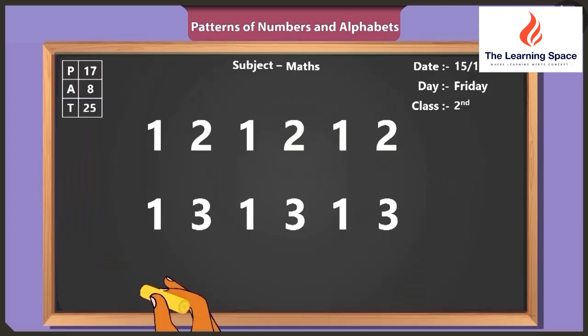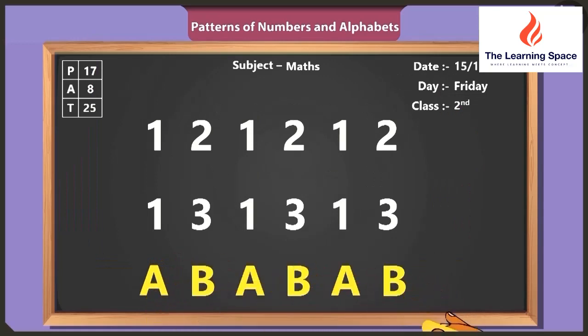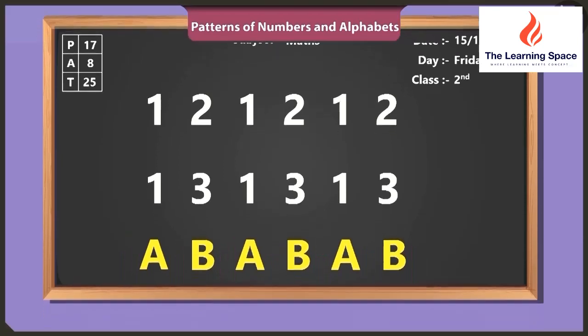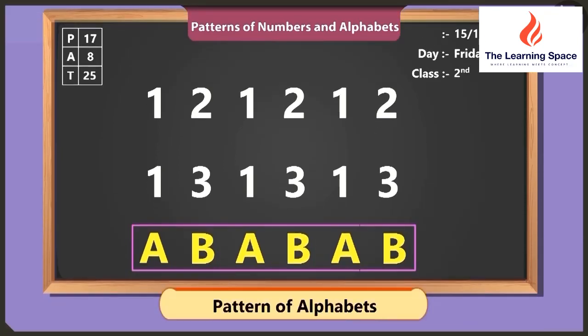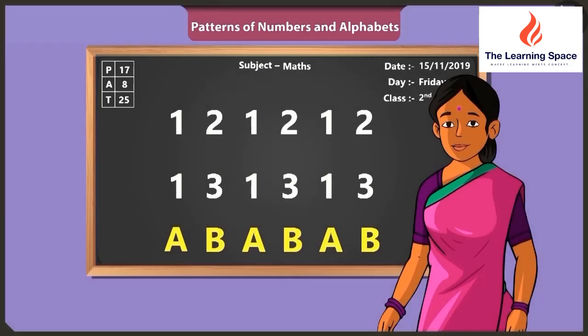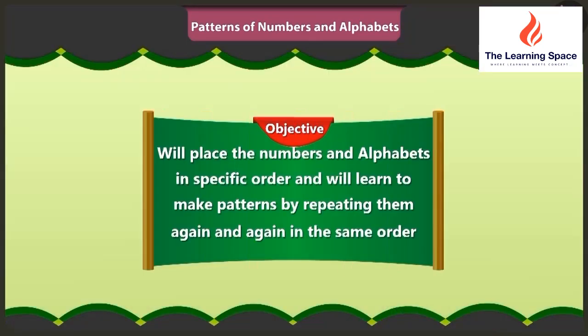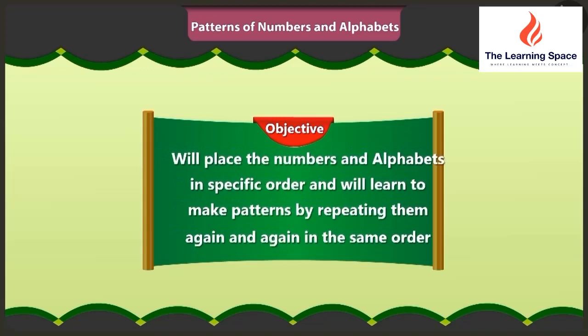Children, now look carefully at what I write on the board. Tell me what I have written. You have written the English alphabets A and B and repeated them again and again. Oh yes, this is a pattern of alphabets. Well done, Vinny. Yes, so friends, today in this video, we will place numbers and alphabets in specific order and learn to make patterns by repeating them again and again in the same order.